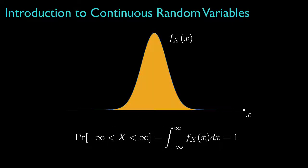Finally, if we evaluate the probability that the random variable takes any value at all, which we know must be equal to one, then we can see that any probability density function must integrate to one over the entire real line.